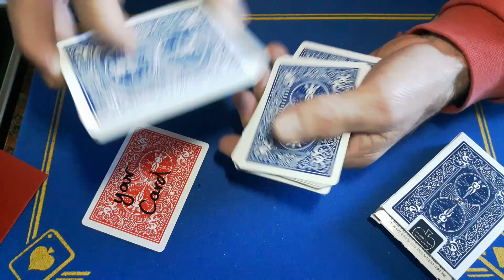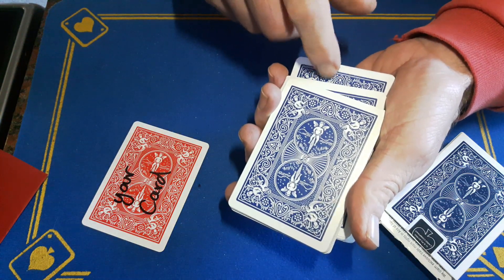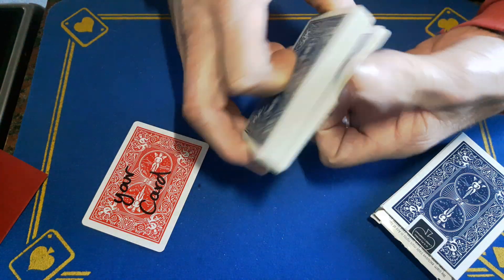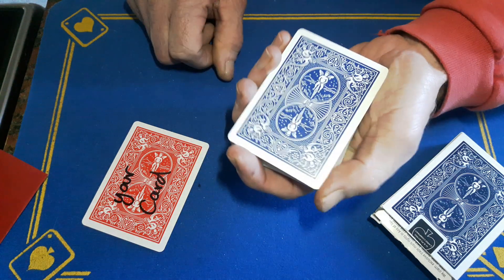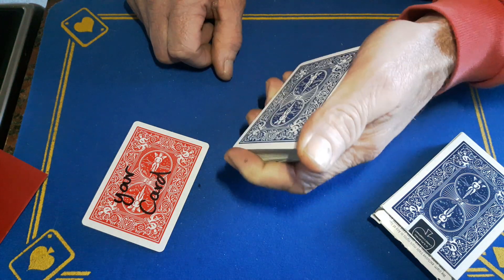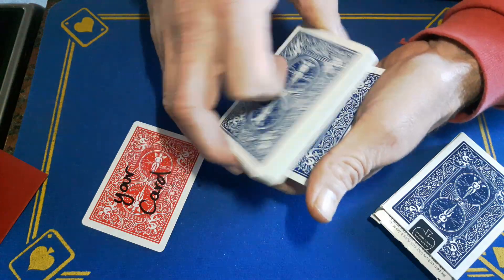And all I did was a fake cut. This is the top of the deck because I want to force that card in a minute. So I'm going to square everything up, catch a break, and then get them to just call out stop when they like as I riffle down the side. I'm just pulling up at that break at the back.